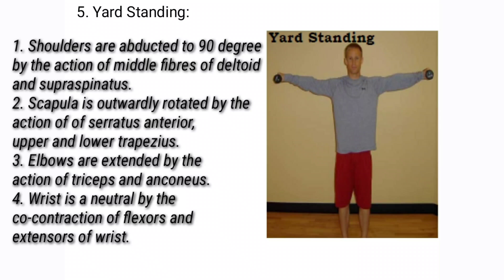The elbows are extended by the action of triceps and anconeus. The wrist is in neutral against gravity by the co-contraction of flexors and extensors, with more action of the extensors of the wrist, which can be ECRB and ECRL.